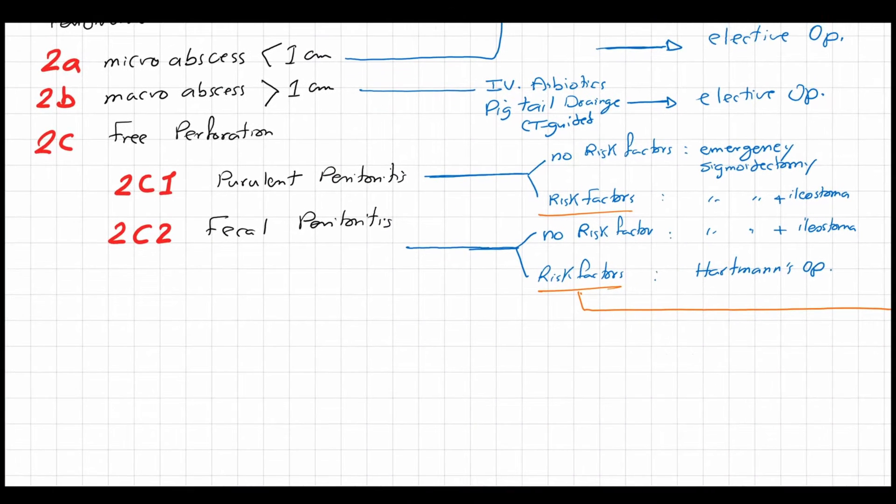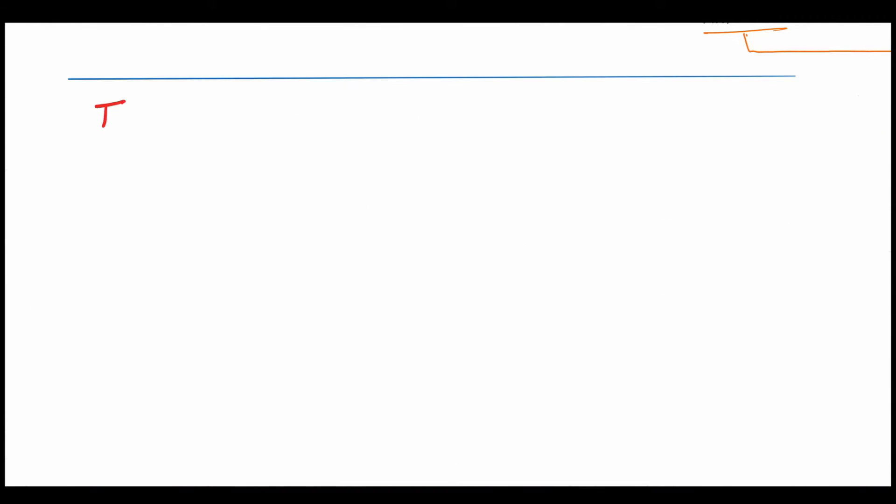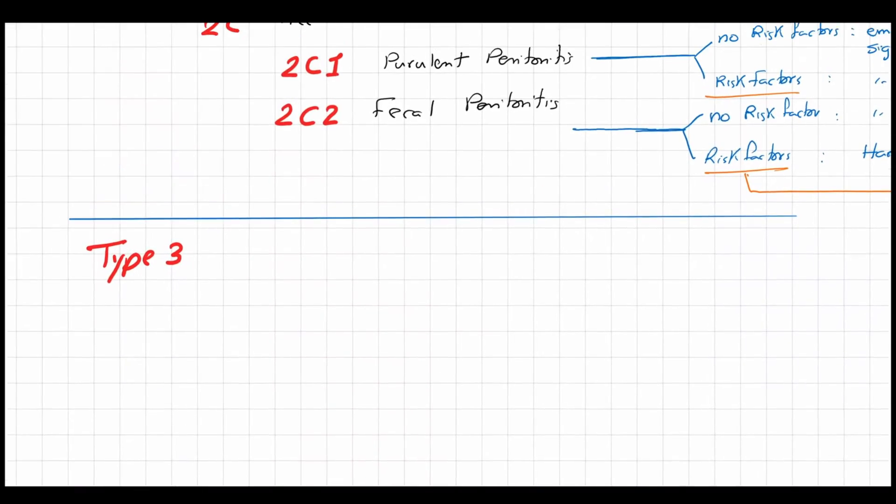Type 3 diverticular disease is chronic diverticulitis. It is subdivided into 3a, 3b, and 3c. Stage 3a is symptomatic uncomplicated diverticular disease. It's like stage 0, asymptomatic, but presented with recurrent pain without signs of inflammation.